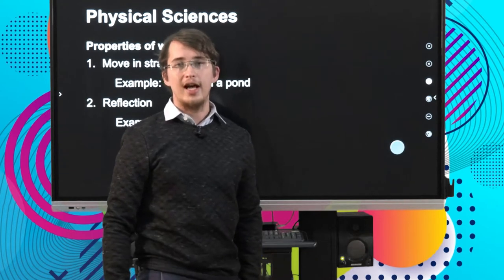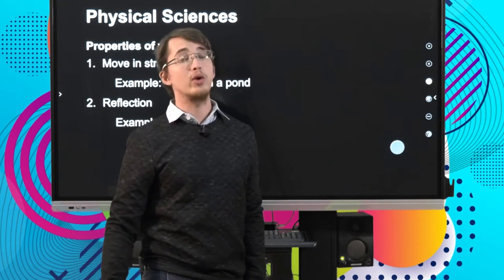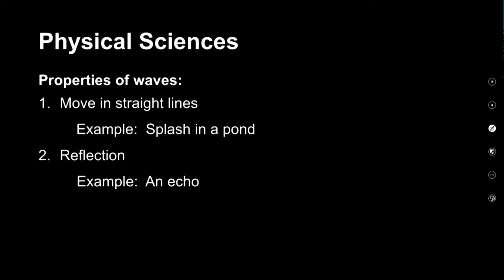Now we need to take a look at some of the properties of waves we've already looked at and see if we can relate them to electromagnetic radiation. We already know that waves always move in straight lines — think of ripples in a pond; when you create a disturbance the waves travel outwards in straight lines. The next property is reflection — we can see this in everyday life if you speak into a large empty room and hear your voice bouncing back off the walls as an echo.